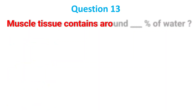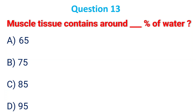Muscle tissue contains around dash percent of water. A. 65; B. 75; C. 85; D. 95. The answer is B, 75.